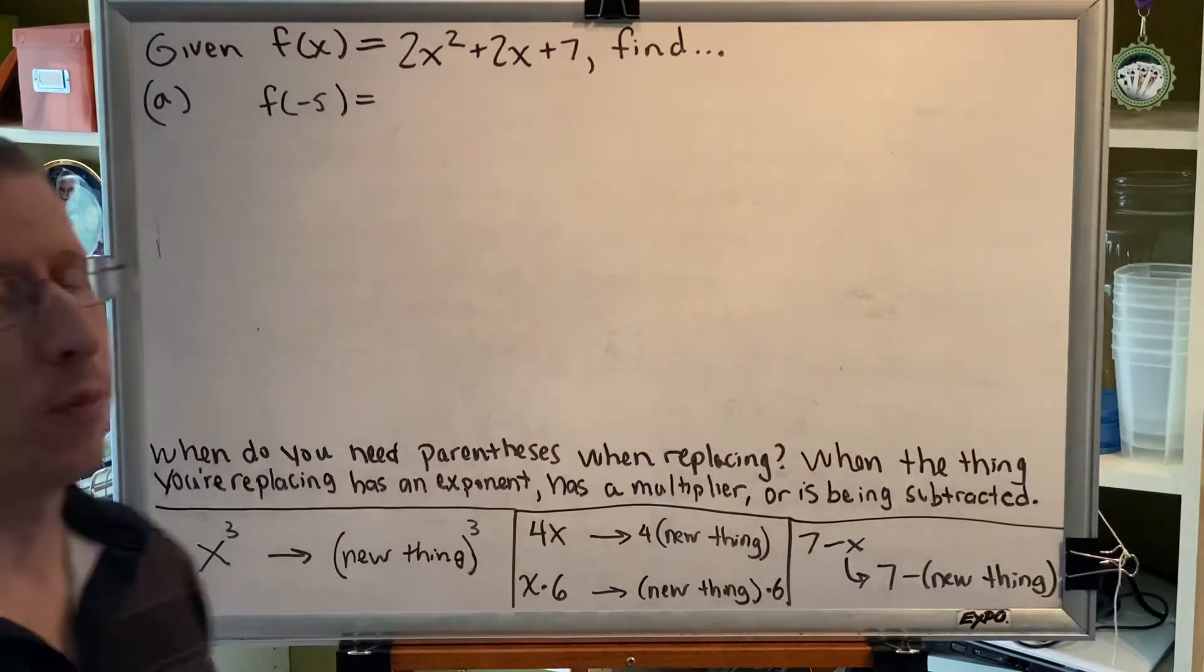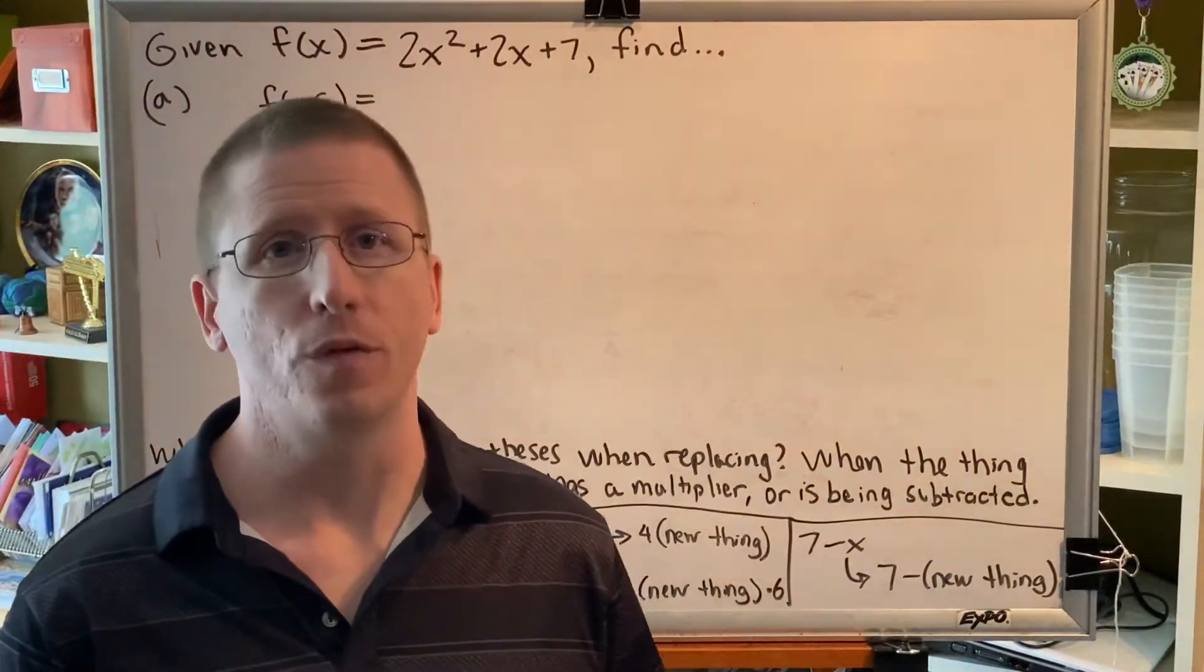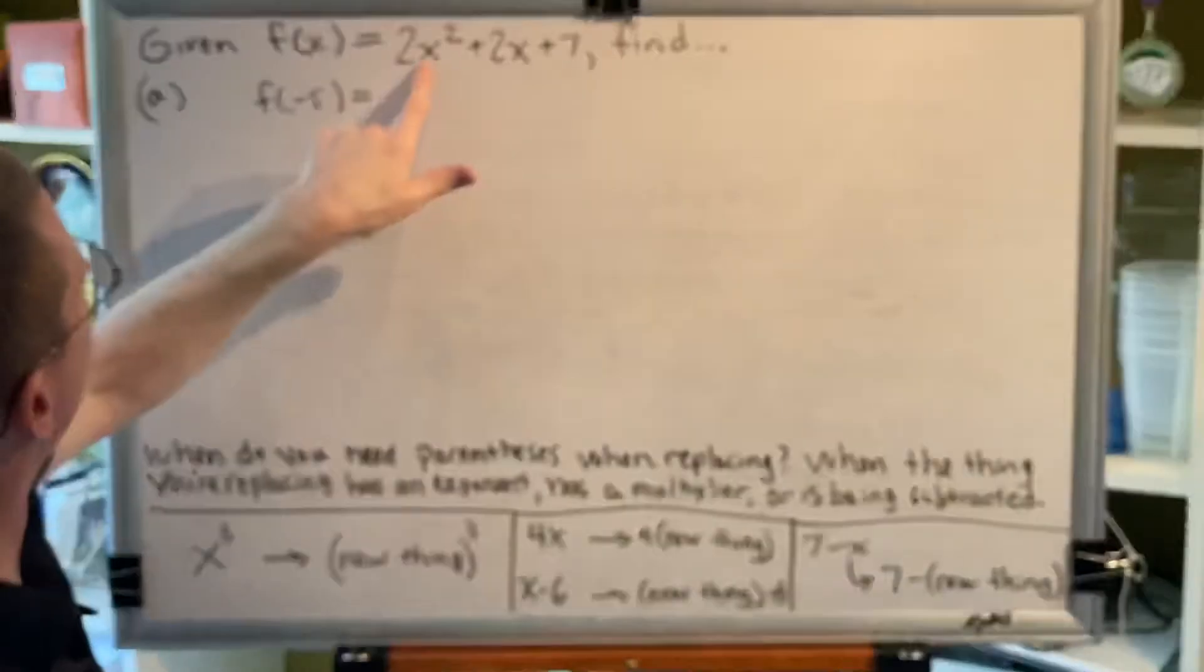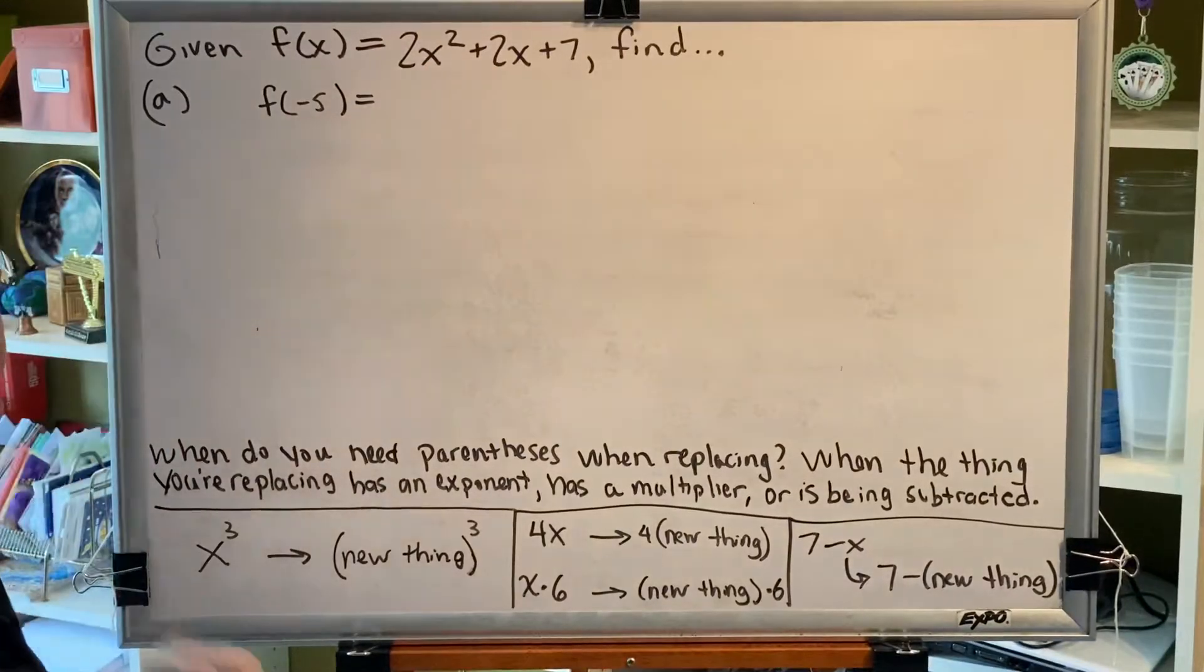Here there's an x in the parentheses, here there's a -5 in the parentheses. So to evaluate a function for a new input, just replace every x that you see in your equation with -5.